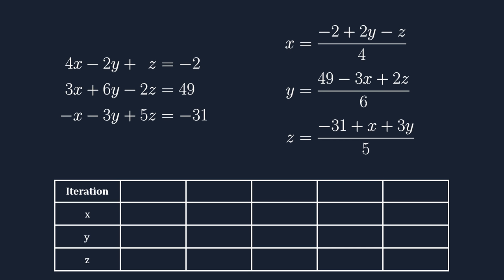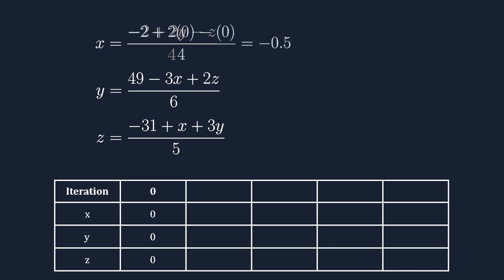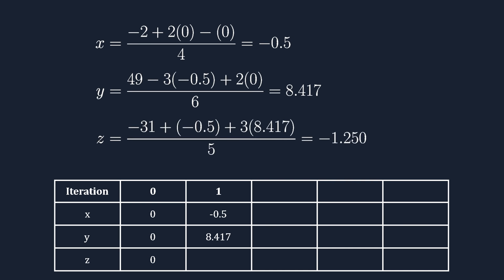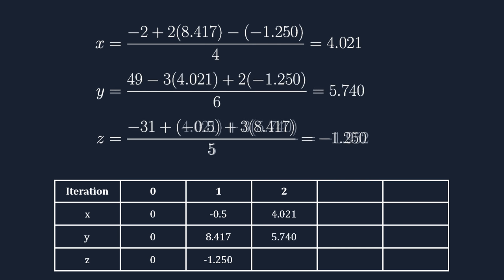Basically, for all the values that we don't know yet, we assign something random to them, like zero. Now we know the values, but they're just incorrect. But we can now start solving the equations using these values, updating the values with the new results we get from the equations. We repeat this process many times, each time using the newest updated values.